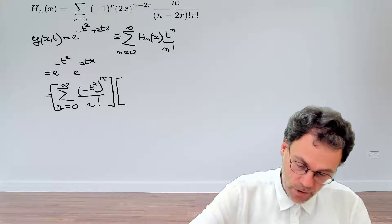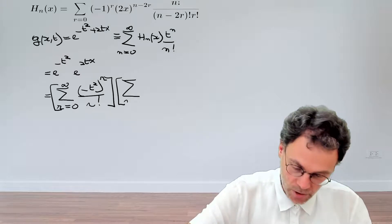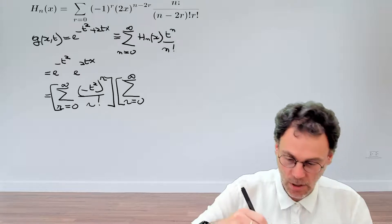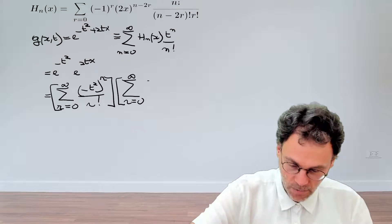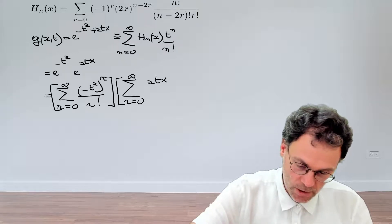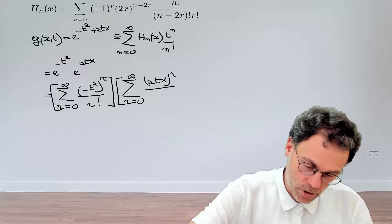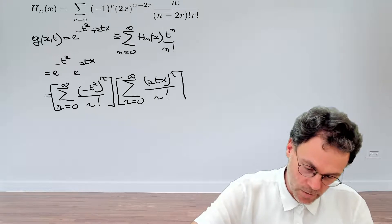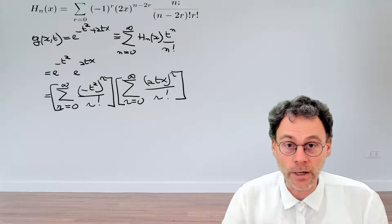And then we do something similar for our second factor. So a summation. And then the argument this time is 2tx to the power of r divided by r factorial. Right? Everybody happy?